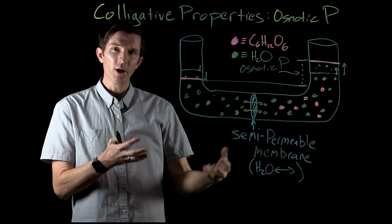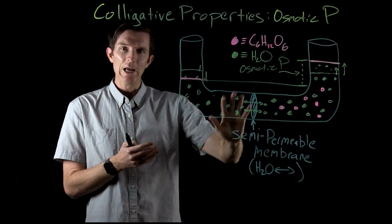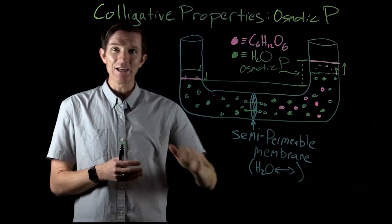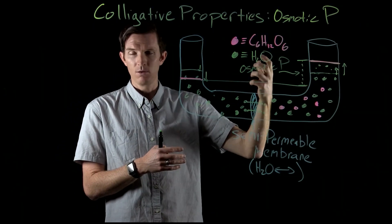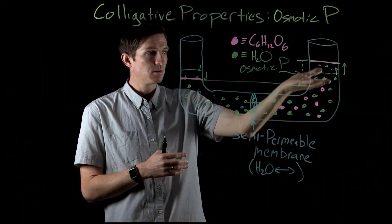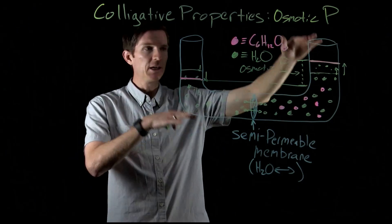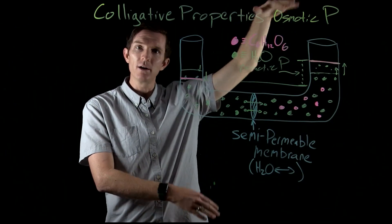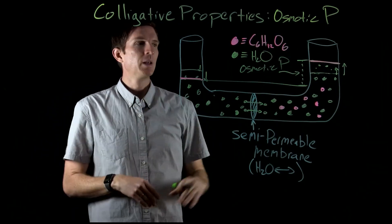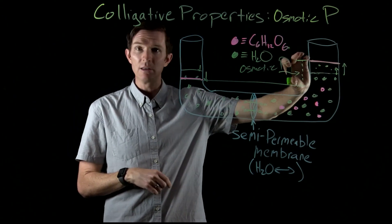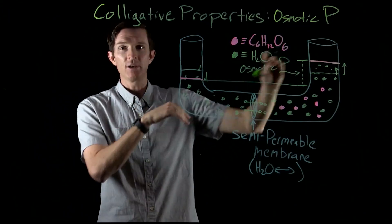Osmotic pressure is the pressure caused by the movement of water — or the tendency of water to move from a low concentration to a high concentration. As it does that and pushes up against gravity, it causes a height difference. That height difference is related to gravity and the pressure that this water is pushing up. It reaches some maximum level and doesn't keep going forever, because as the difference gets greater, the force pushing down is increasing, and we get to a stable level. This is the osmotic pressure — the amount of water pushed through the permeable membrane to allow this height difference to occur.